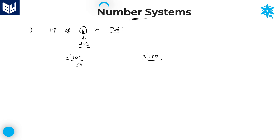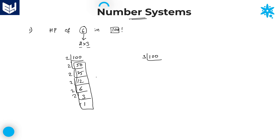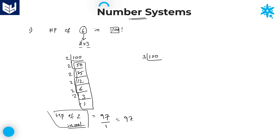First, divide 100 with 2: that gives 50, then 25, then 12, then 6, then 3, then 1. Adding all these quotients — the sum is 97. So the highest power of 2 in 100 factorial is 97. But this is not your final answer.